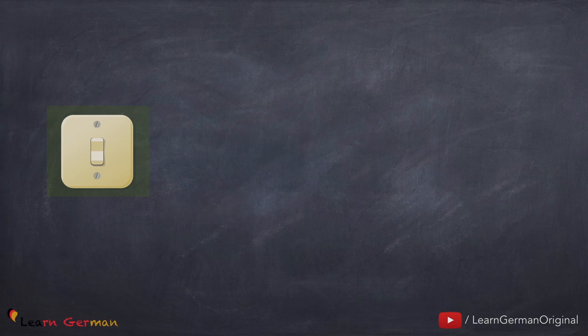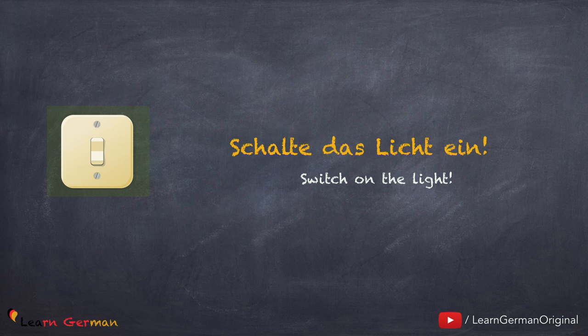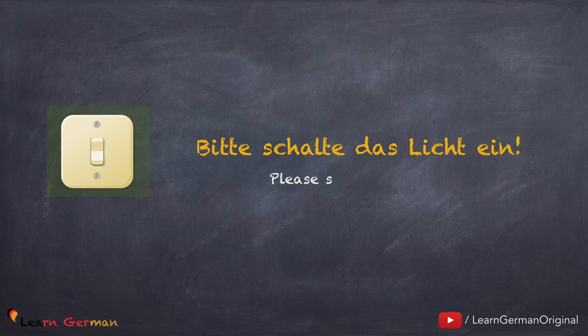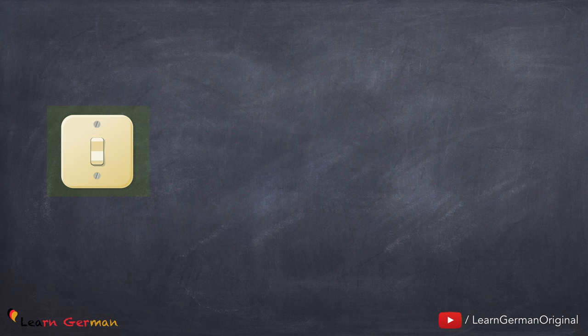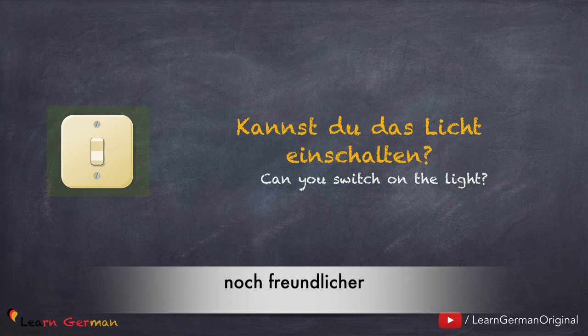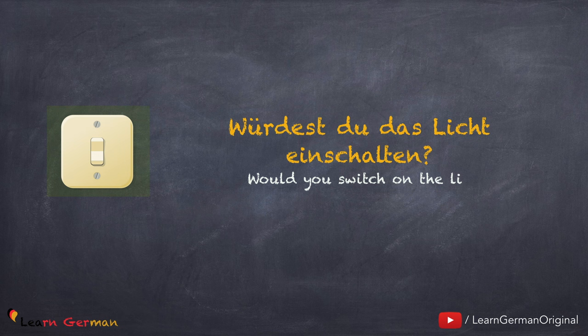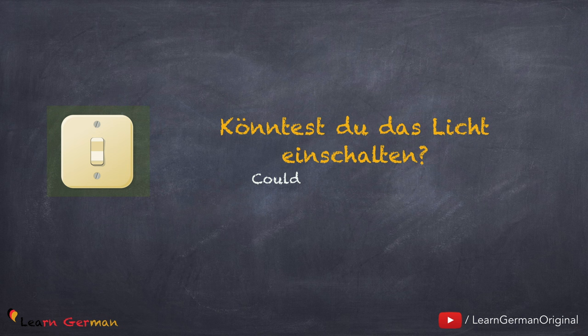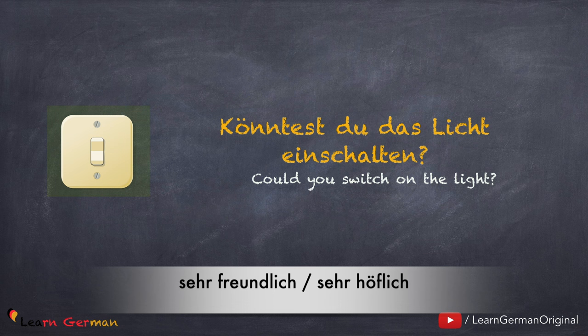So, there are various ways of forming a request. You can be very direct and say: Schalte das Licht ein. Dieser Satz ist in Imperativ. Imperativ haben wir in A1 gelernt. Einen Link zu diesem Video findest du unten in der Beschreibung. Leider ist dieser Satz nicht freundlich. Etwas freundlicher ist der Satz, wenn du sagst: Bitte schalte das Licht ein. Das kann auch eine freundliche Bitte werden: Kannst du das Licht einschalten? Mit Konjunktiv 2 kann diese Frage viel freundlicher werden: Würdest du das Licht einschalten? Und sehr höflich und sehr freundlich ist der Satz, wenn man sagt: Könntest du das Licht einschalten?